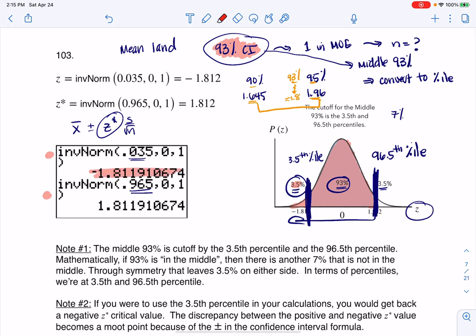Basically, 1.812, I get a negative version and a positive version, and that's because of symmetry, just depending on what side of the z-curve I'm on. And so that's it.